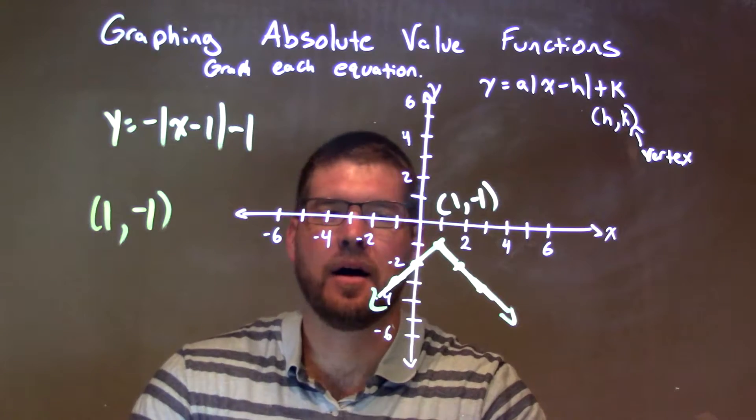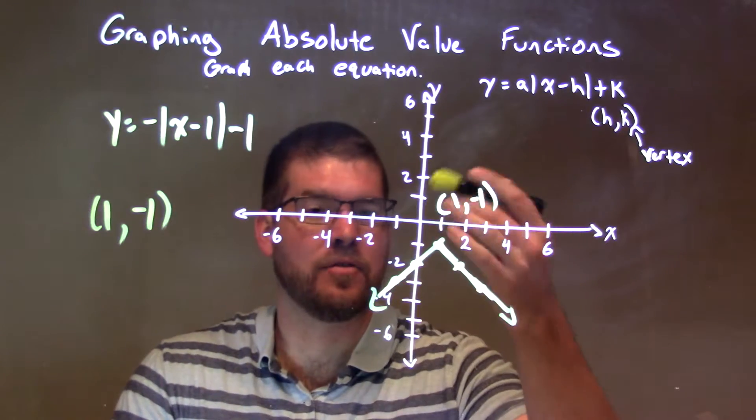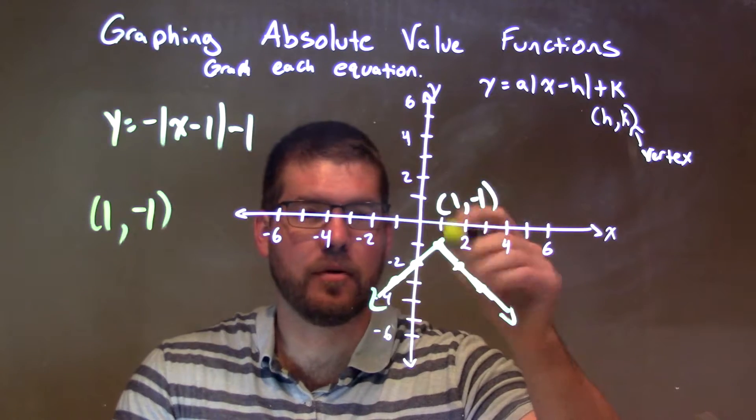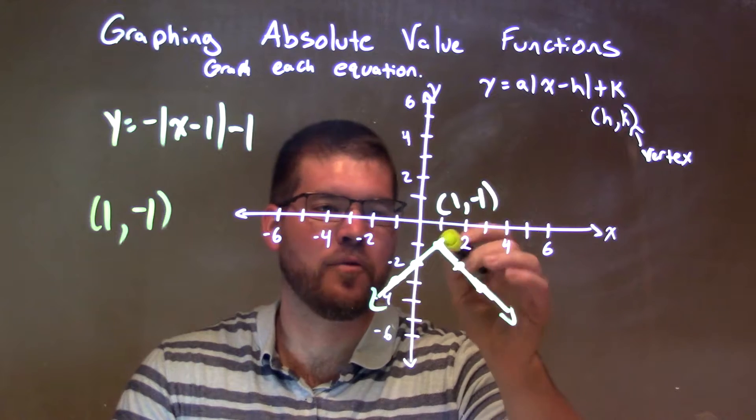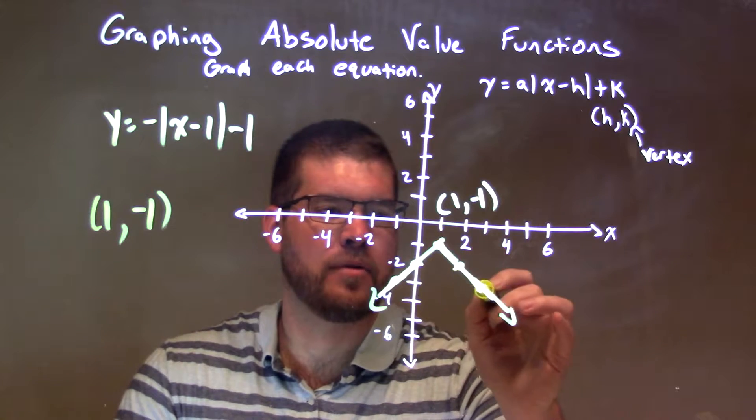Then we see a negative 1 on the outside, so that is our slope, tells us it's a V-shape, an upside-down V. That's the negative part, and then the negative 1 is the slope, down 1 to the right 1, down 1 to the right 1.